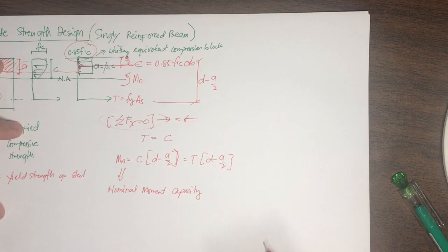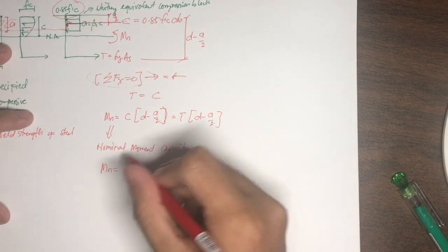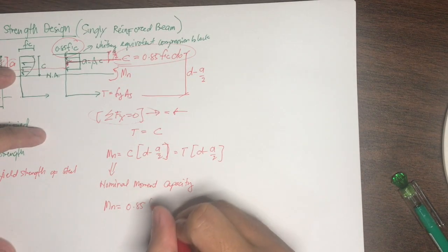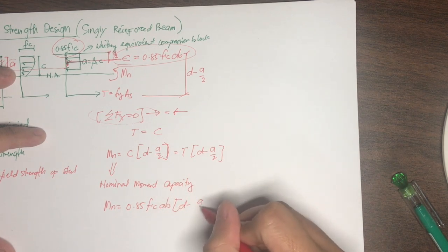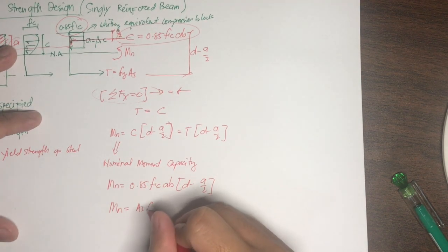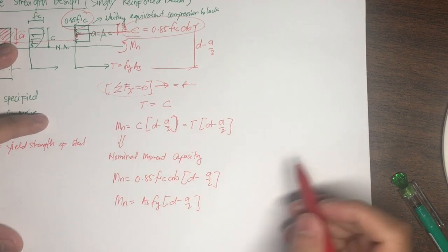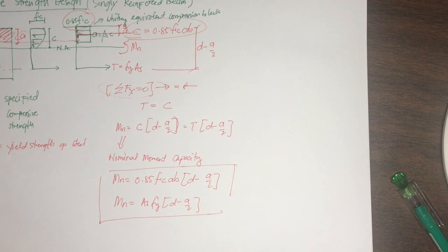To compute Mn in terms of C: Mn equals 0.85 fc prime times A times B, multiplied by (D minus a/2). These are the formulas we use in determining the moment capacity of our beam section.